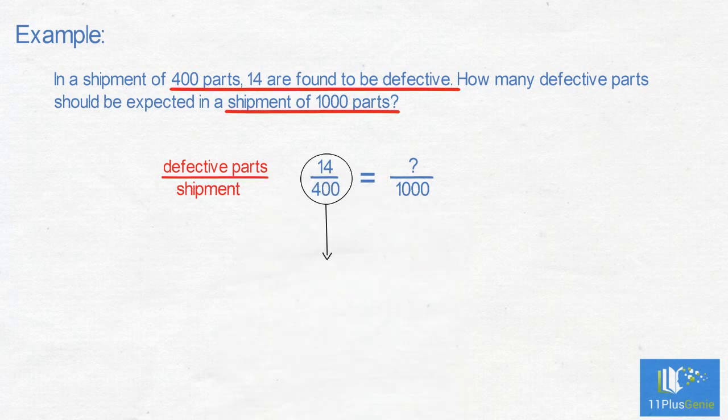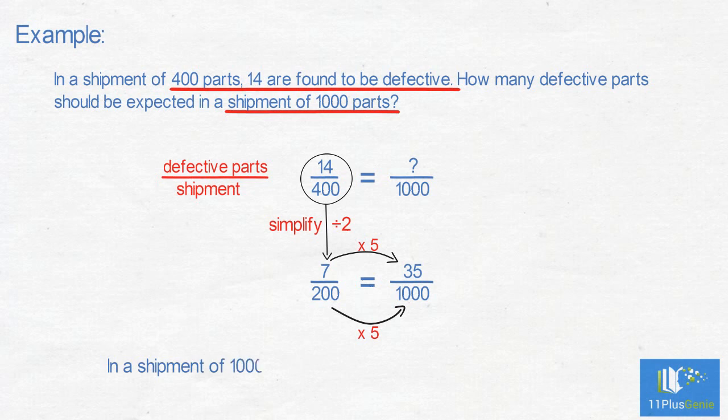Two can go into both numbers. 14 divided by 2 is 7, and 400 divided by 2 is 200. Now we can times the 200 by 5 to get 1000. We must times the 7 also by 5, which gives us 35. In a shipment of 1000 parts, we expect 35 parts to be defective.